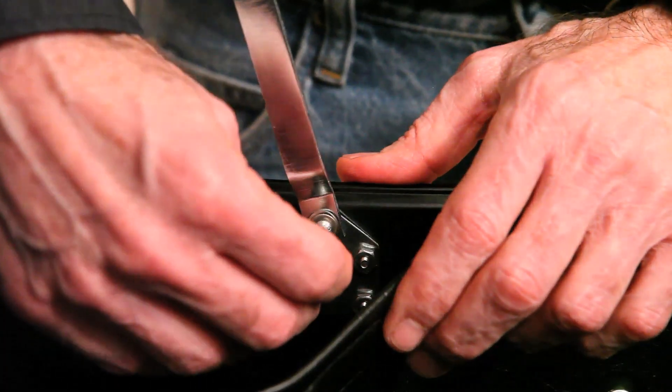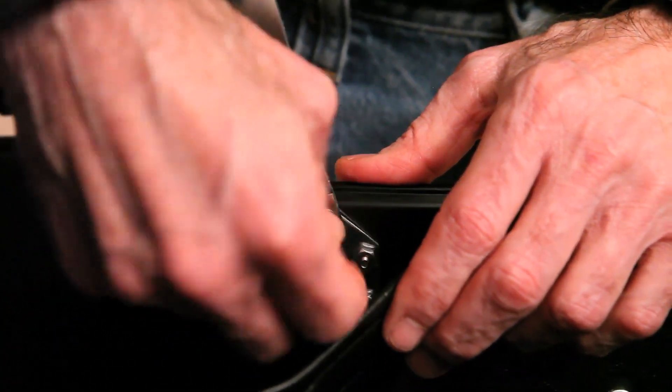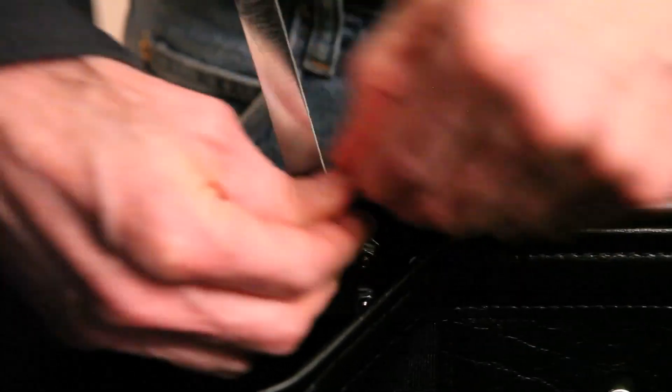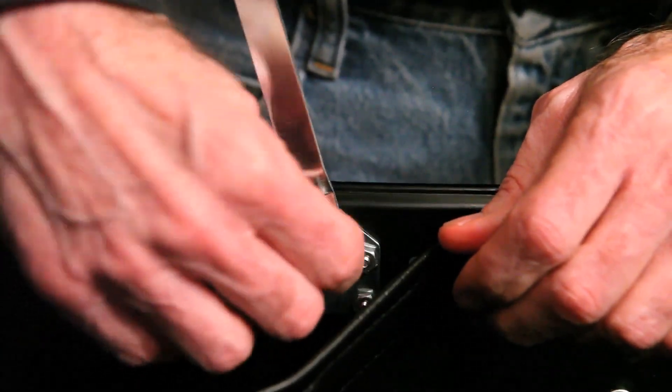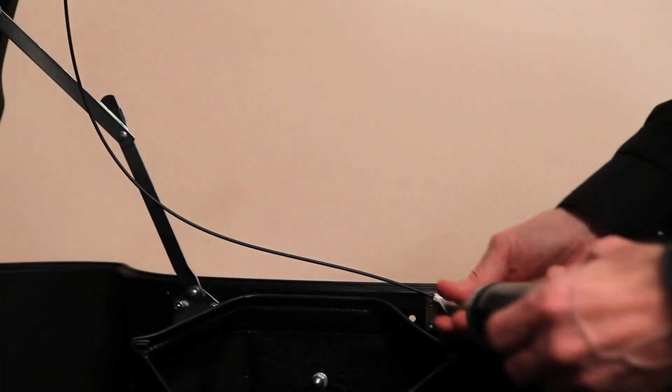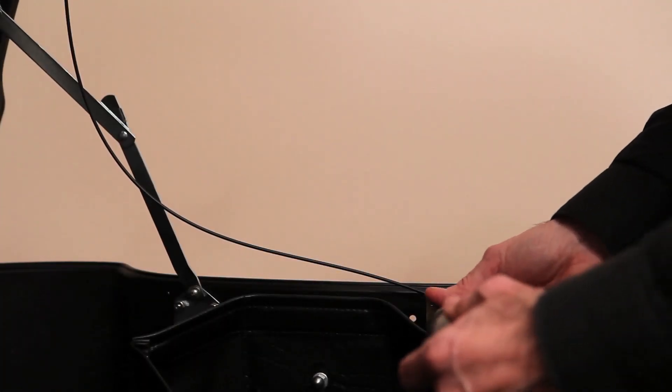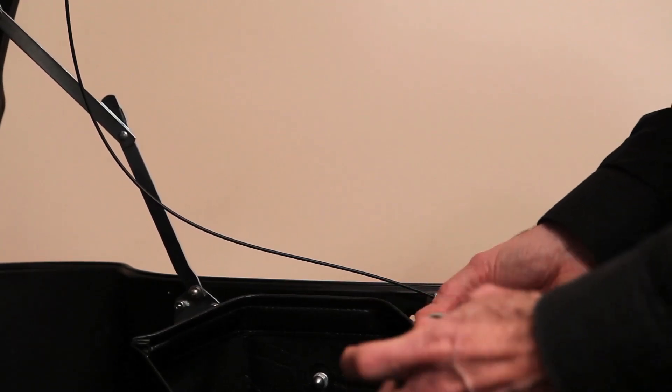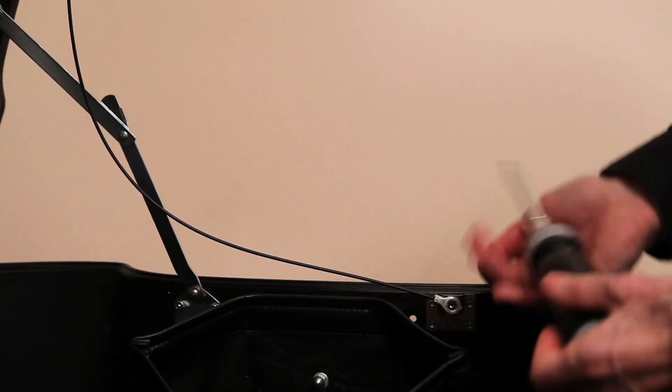Now, secure the bottom screw with the Allen wrench. The final step is to remove the stock TorPak cable using your Torx wrench.